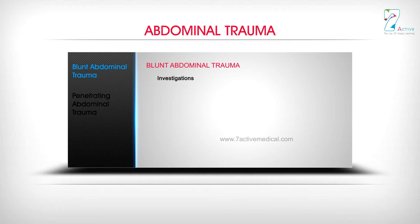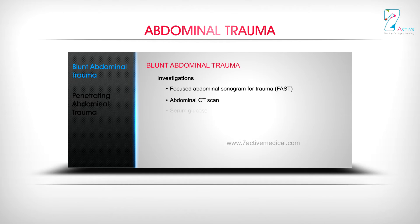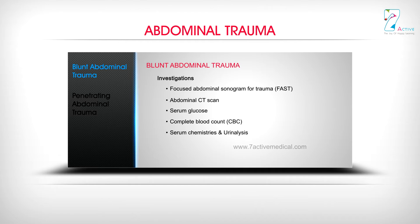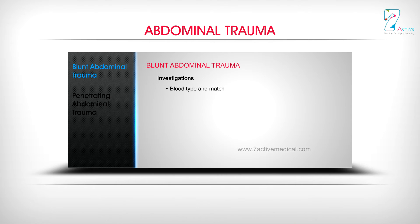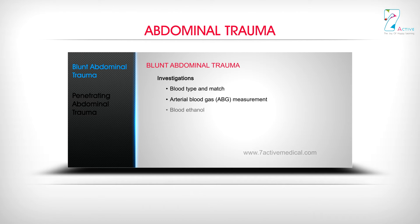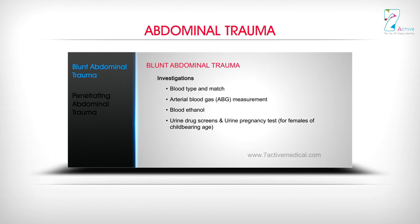Investigations for blunt abdominal trauma include: Focused Abdominal Sonogram for Trauma (FAST), abdominal CT scan, serum glucose, complete blood count (CBC), serum chemistries, urinalysis, coagulation studies, blood type and match, arterial blood gas (ABG) measurement, blood ethanol, urine drug screens, and urine pregnancy test for females of childbearing age.